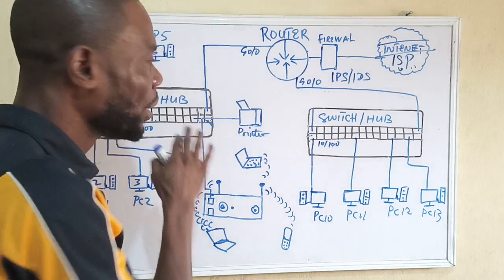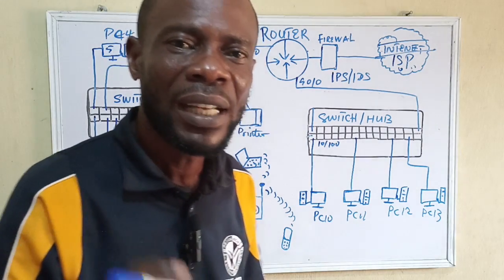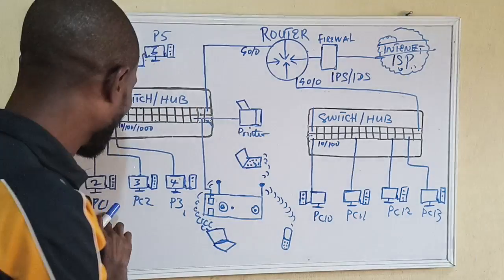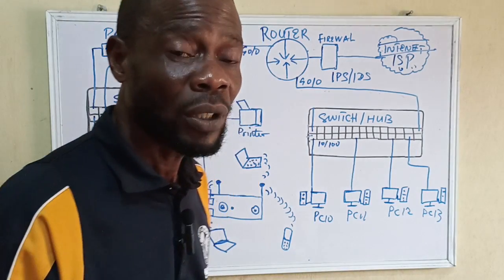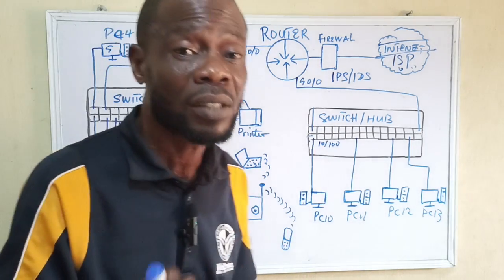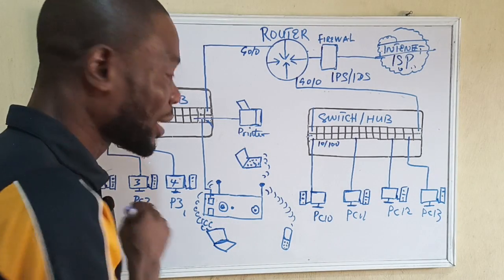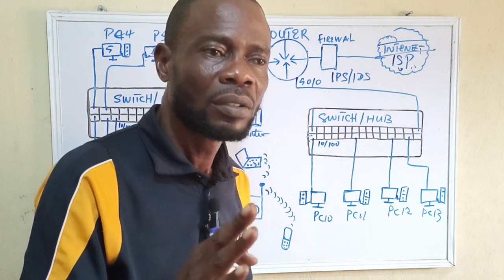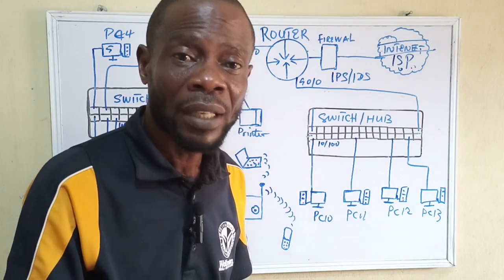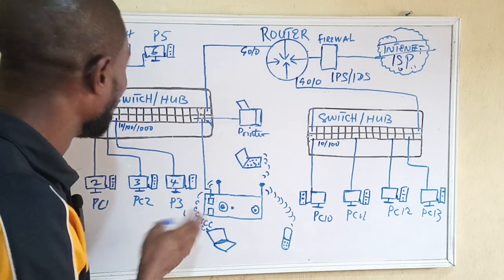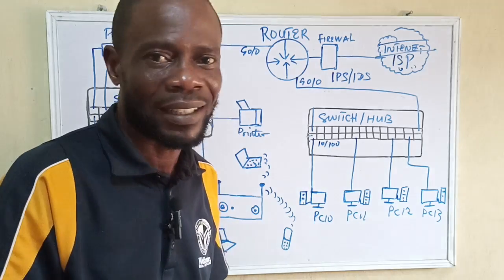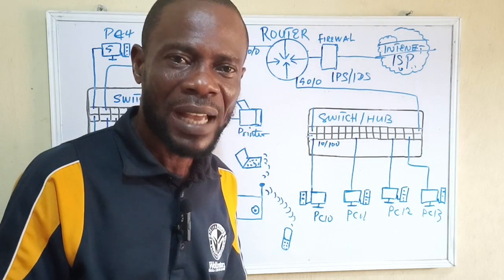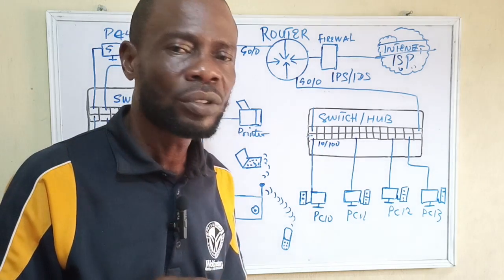Each computer connected to a switch is in its own collision domain — like having multiple lanes on a road, with nothing obstructing each lane. When PC1 wants to talk to PC2, it goes straight to PC2, and PC4 won't be aware of that communication. This is the benefit of a switch's collision domain design, unlike a hub where PC1 wanting to communicate with PC2 broadcasts to everyone on the same wire. Every computer gets a copy, but only the intended recipient keeps it, making hubs unsuitable for large networks.